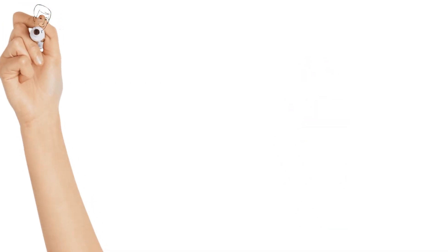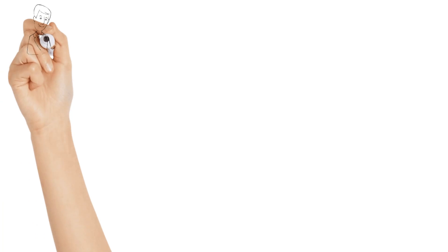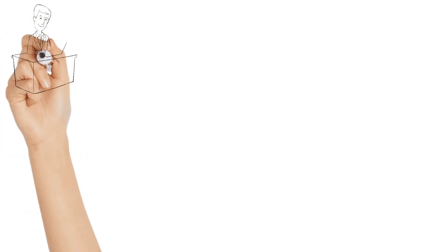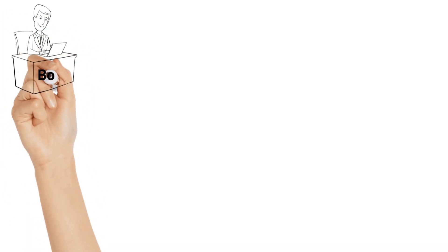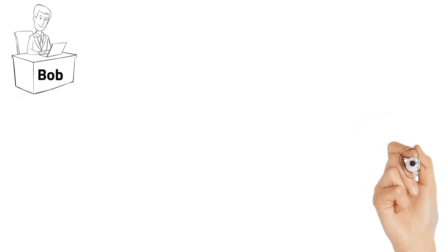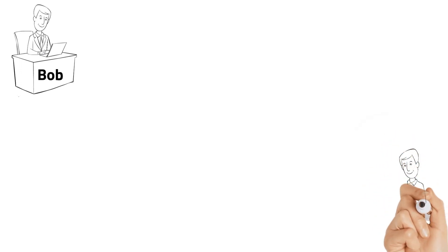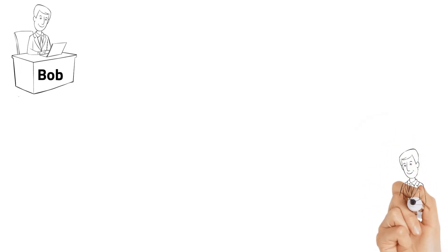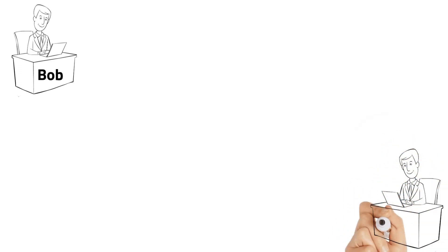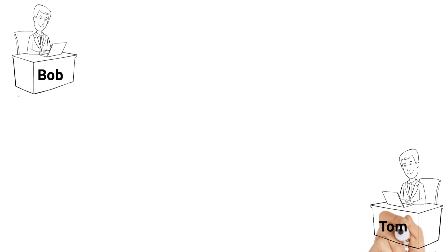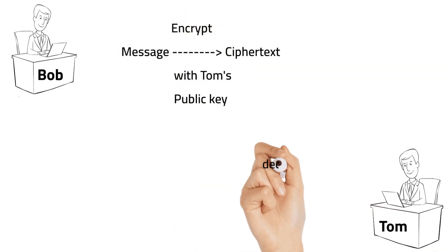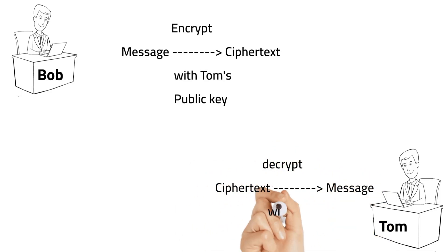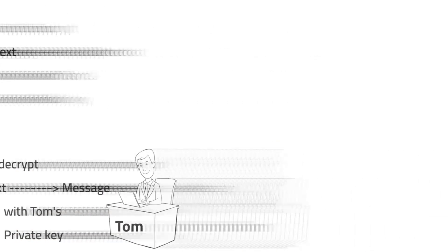It uses public key encryption to encrypt messages. Each user has a public key and a private key. The public key is shared with others to encrypt messages, while the private key is kept secret and used to decrypt the message.